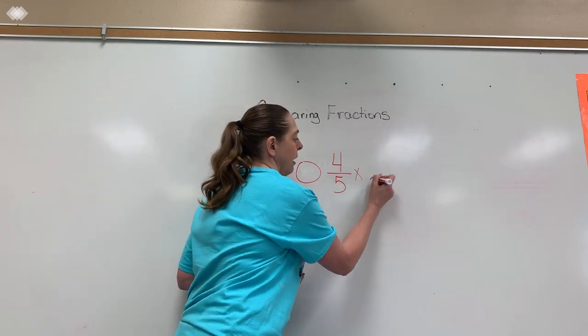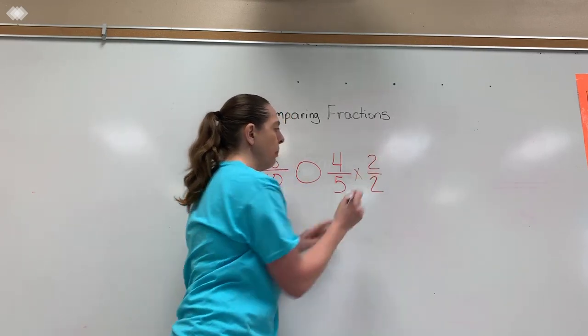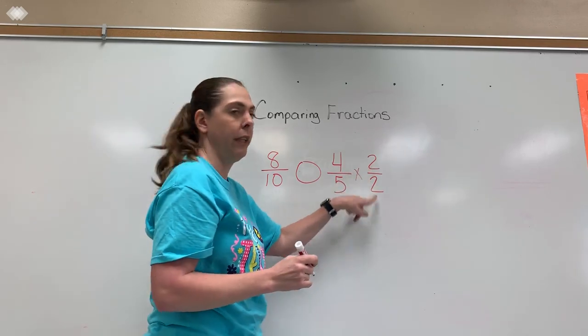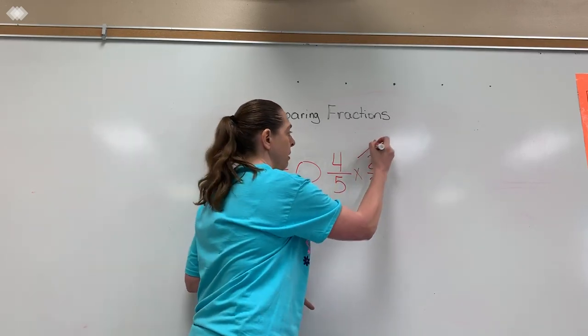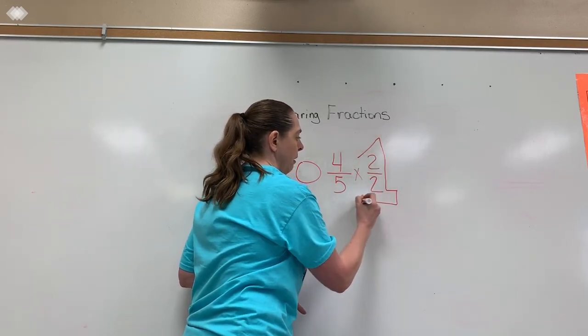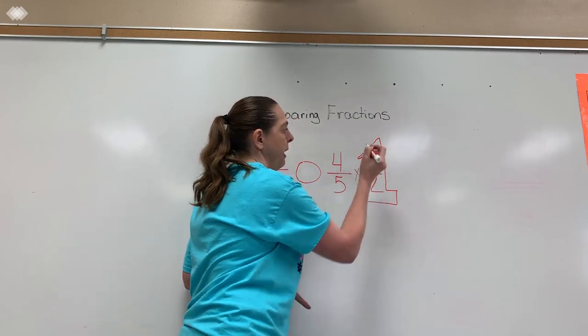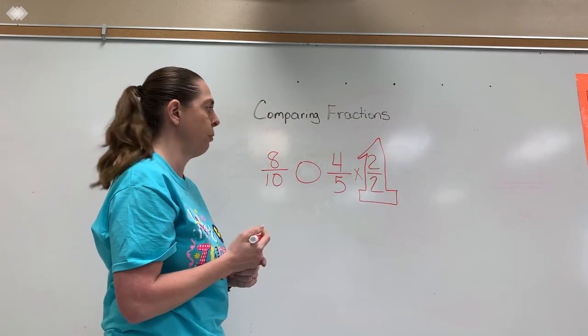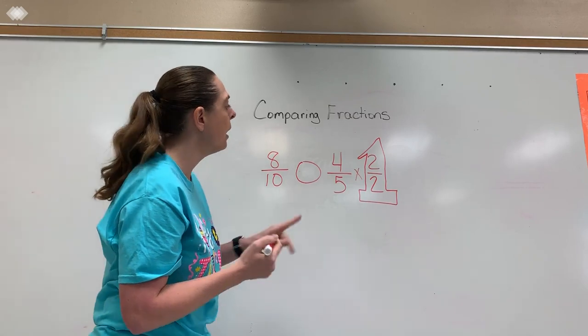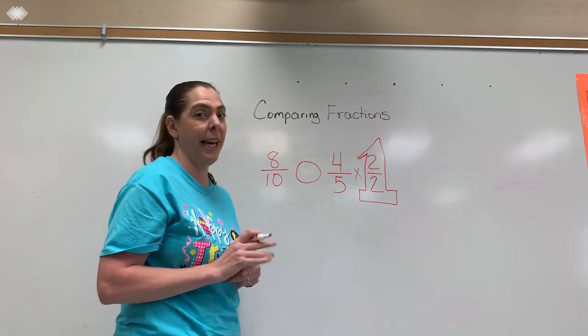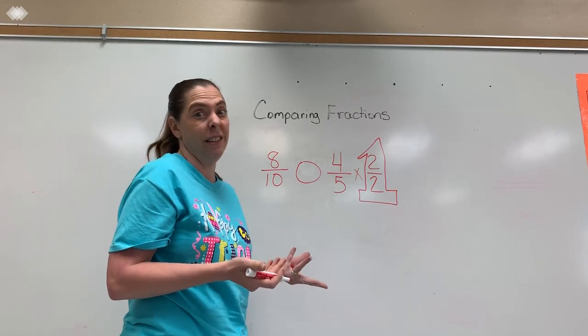What happens is I'm really multiplying my fraction by the equivalent to 1. This is really two shaded pieces with two total pieces would actually equal 1. And we know that anytime we multiply anything times 1, it's itself.